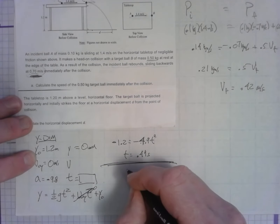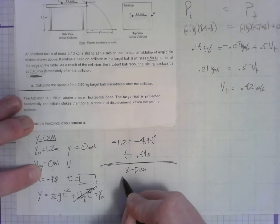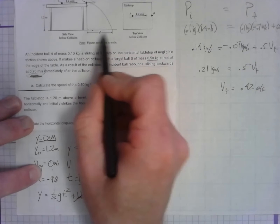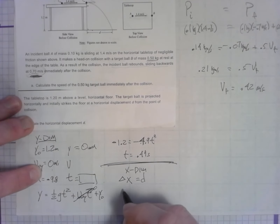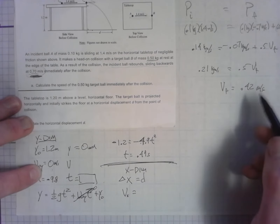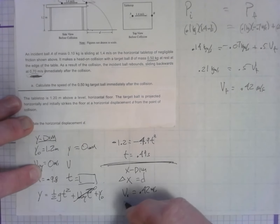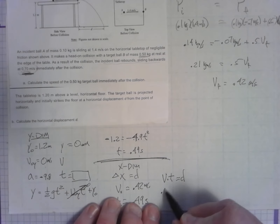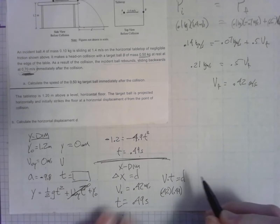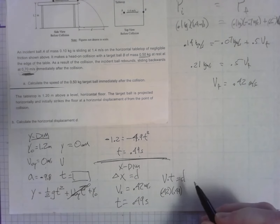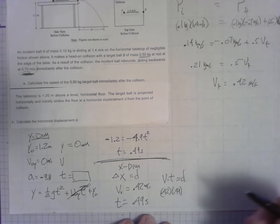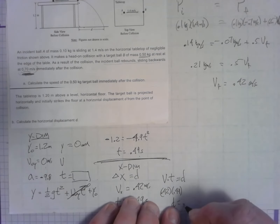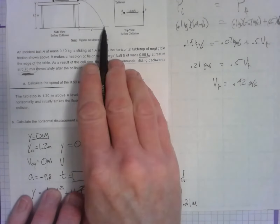In the x-dimension, the only equation needed is distance equals rate times time. The x-velocity is 0.42 m/s (the speed found from momentum conservation), and the time is 0.49 seconds. So the horizontal distance is 0.42 times 0.49, which equals 0.21 meters from the edge of the table.